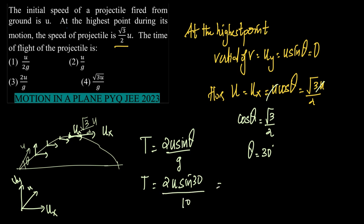The option says g, so we will consider not 10, we will write it as g. So, sin 30 is 1/2. So, we have 2U into sin 30 is 1/2, the whole upon g. Therefore, what we get is U/g, right? 2 and 2 will cancel off. What we get is U/g. And therefore, the time of flight is option 2, U/g.